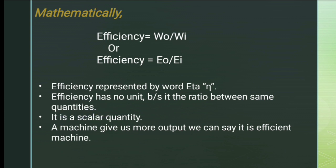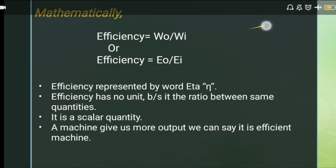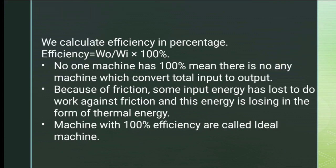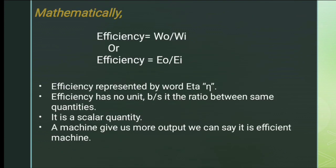Since efficiency involves work or energy divided by work or energy, the units — joules divided by joules — cancel each other out, leaving efficiency as a dimensionless quantity. It is a scalar quantity, meaning no direction specification is needed.